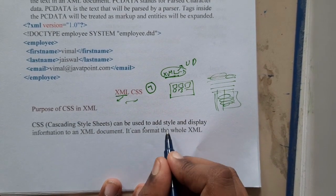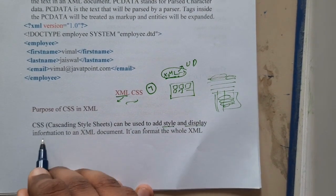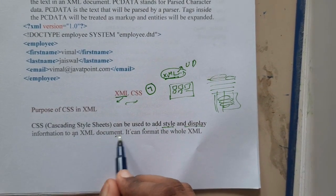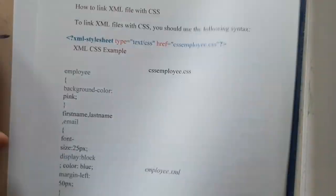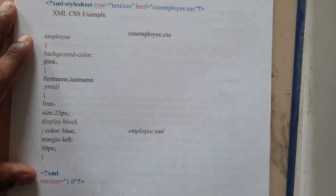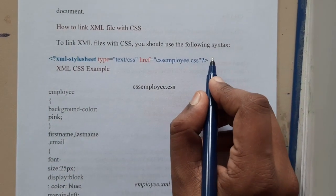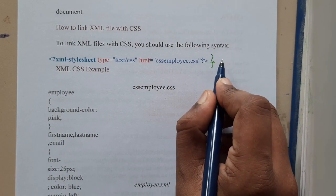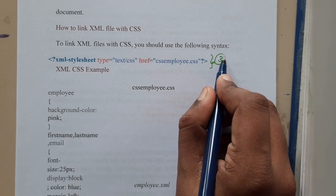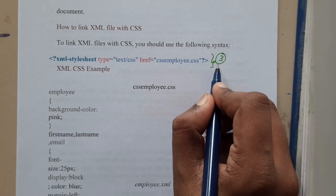Purpose of CSS in XML: Cascading Style Sheets can be used to add style and display information to an XML document. It can be for the whole XML. If you remember in our first unit last lecture, we discussed that in HTML you can add CSS in three different ways.